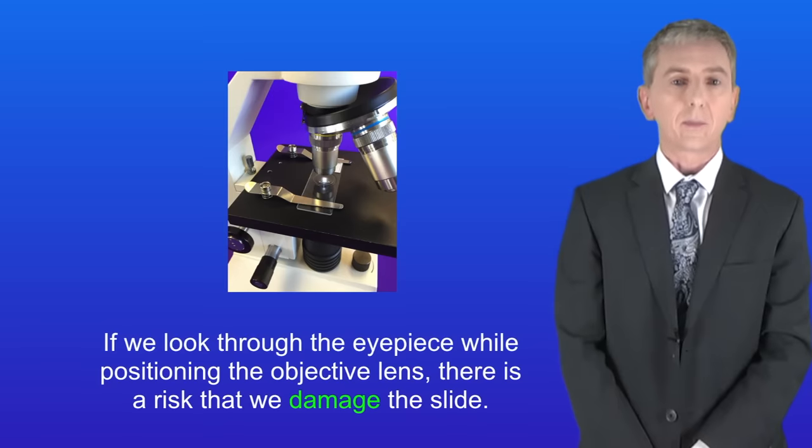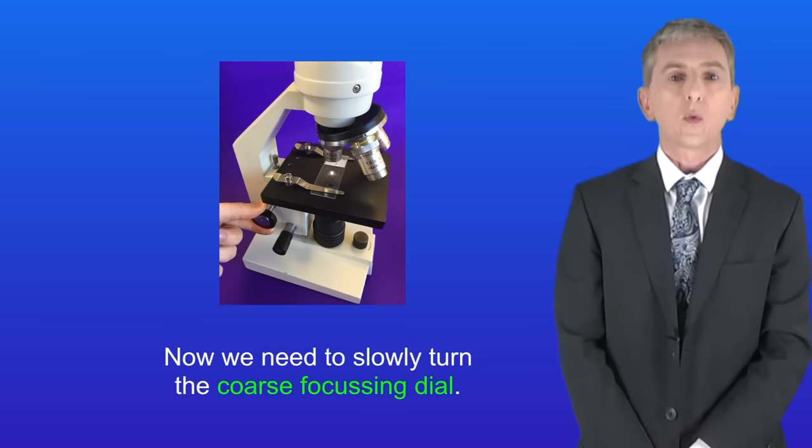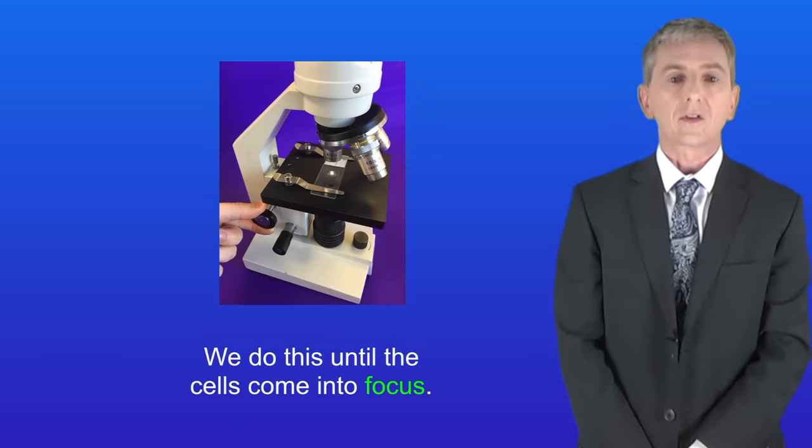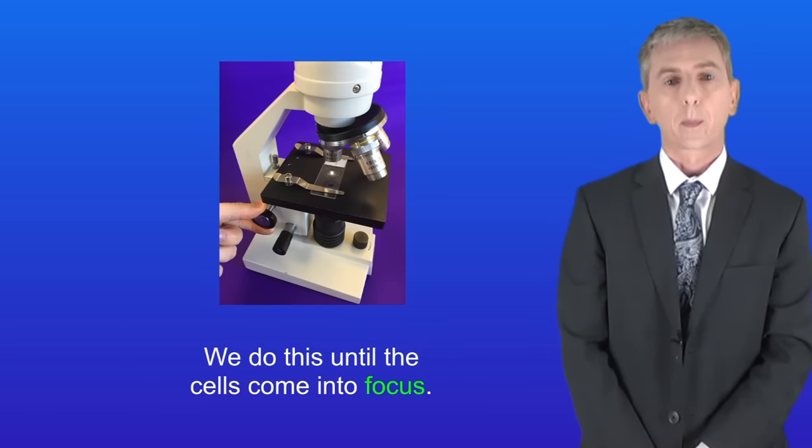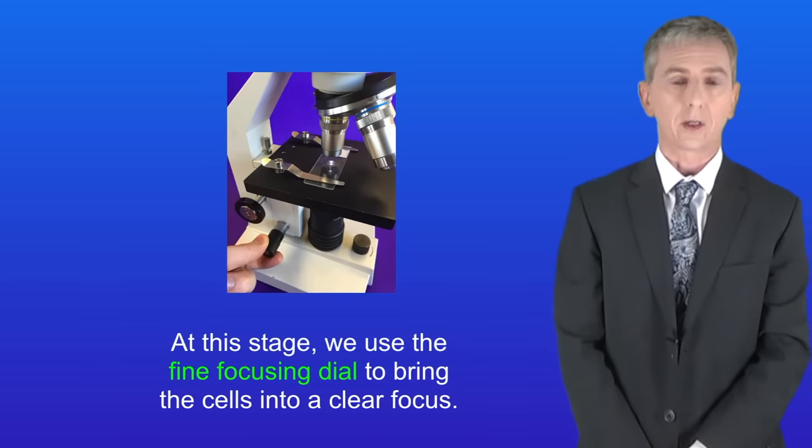If we look through the eyepiece while positioning the objective lens there's a risk that we damage the slide. At this stage we look down through the eyepiece. Now we need to slowly turn the coarse focusing dial. This increases the distance between the objective lens and the slide. We do this until the cells come into focus. At this stage we use the fine focusing dial to bring the cells into a clear focus.